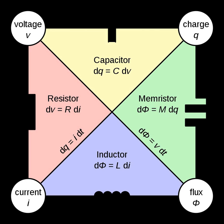Linear elements are elements in which the constituent relation — the relation between voltage and current — is a linear function. They obey the superposition principle. Examples of linear elements are resistances, capacitances, inductances, and linear dependent sources.